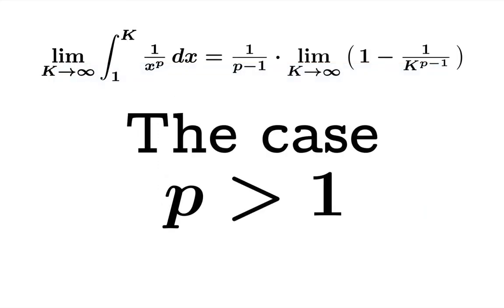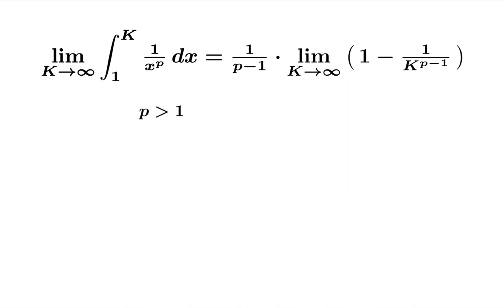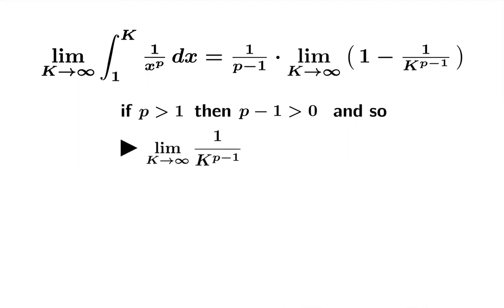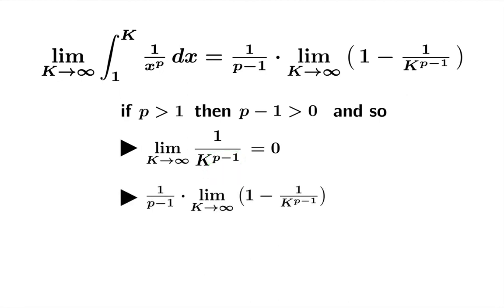Now for the case p greater than 1: if p is greater than 1, then p minus 1 is greater than 0. So the limit of 1 over k to the p minus 1 — since p minus 1 is positive, the denominator goes to infinity — means this limit goes to 0. Looking at our expression for the definite integral, the limiting term involving k vanishes, leaving 1, and we get as a limit 1 over p minus 1.